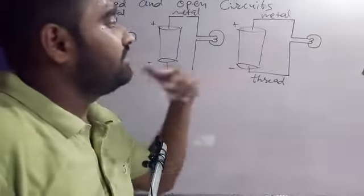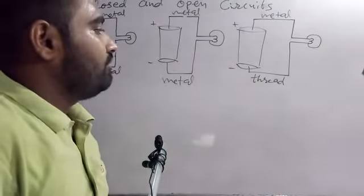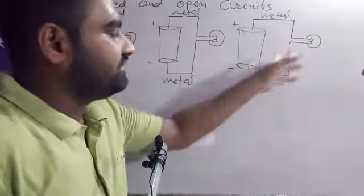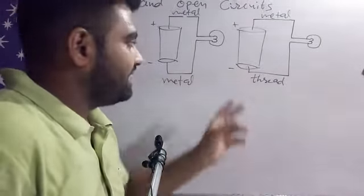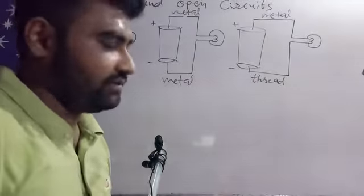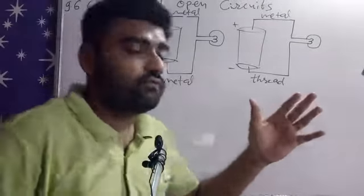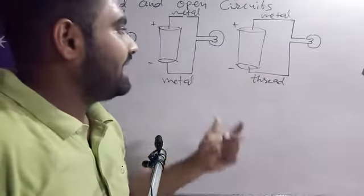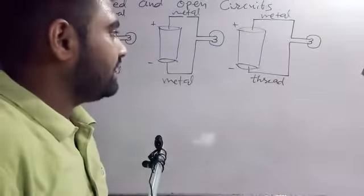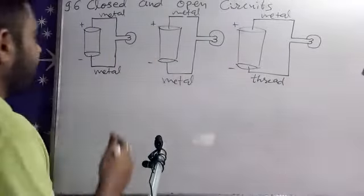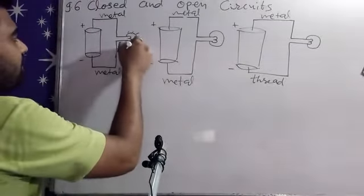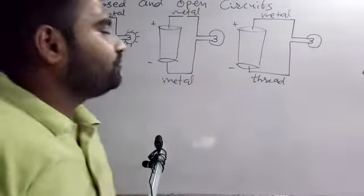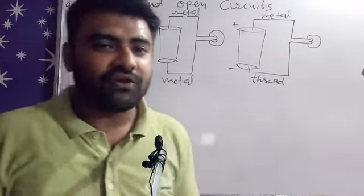Thread is an insulator, whereas metal is a conductor. Because of the insulator, no current is flowing through this circuit — even though the circuit is closed — because insulators do not allow current to flow through them. So we only get current and a glowing bulb in the first diagram. These are called closed and open circuits. Thank you very much.